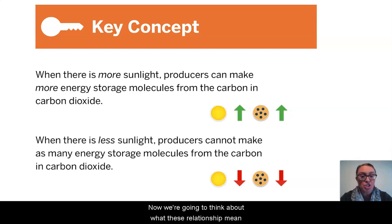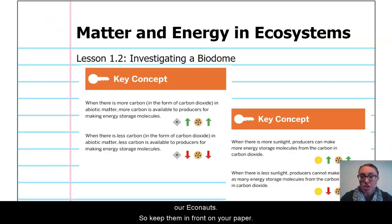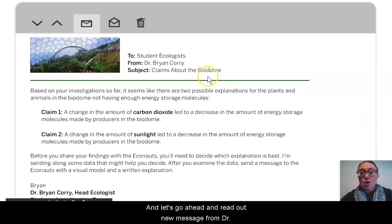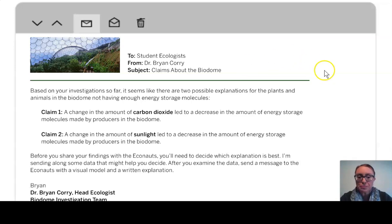Now we're going to think about what these relationships mean for our energy storage molecules in the biodome of our Econauts. So keep them in front of your paper. And let's go ahead and read our new message from Dr. Brian Corey to us as student ecologists about what he may think is going on in the biodome. So his email to us reads, based on your investigation so far, it seems like there are two possible explanations for the plants and animals in the biodome not having enough energy storage molecules. Claim one is that a change in the amount of carbon dioxide led to a decrease in the amount of energy storage molecules made by the producers in the biodome.